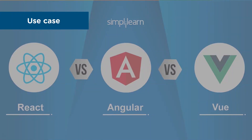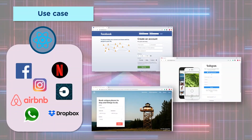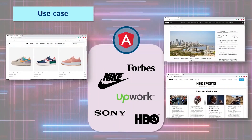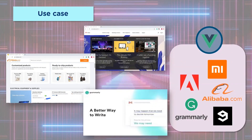Now let's look at the use cases from a business perspective. Top websites that use React include Facebook, Instagram, and Netflix. Angular is used by Nike, HBO, Forbes, and Sony. And Vue is commonly used by Alibaba.com, Grammarly, 9gag, and Adobe.